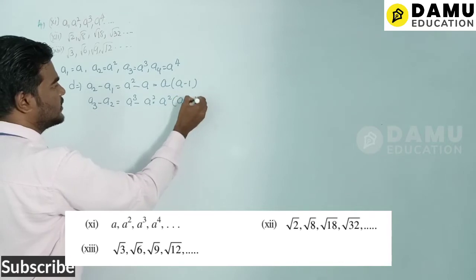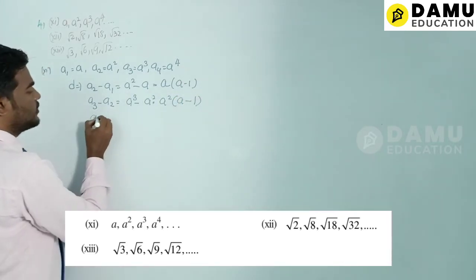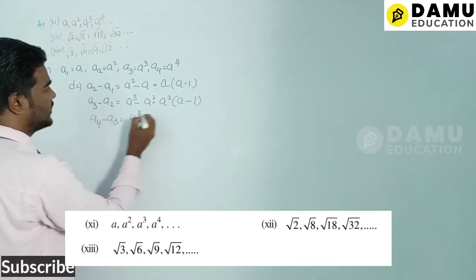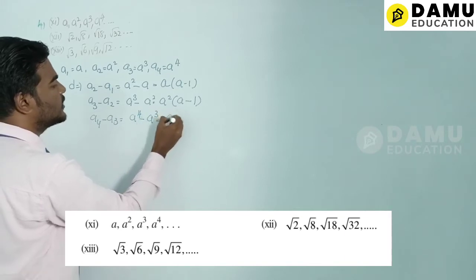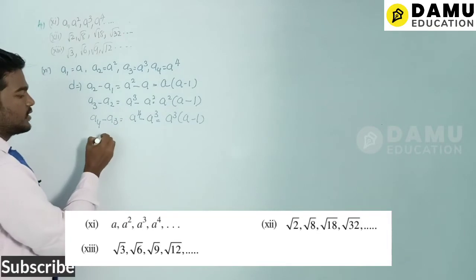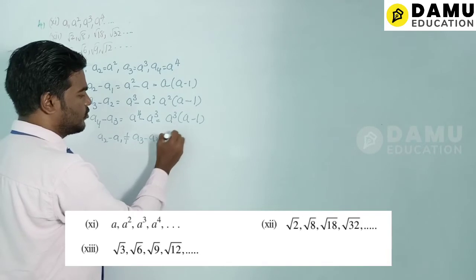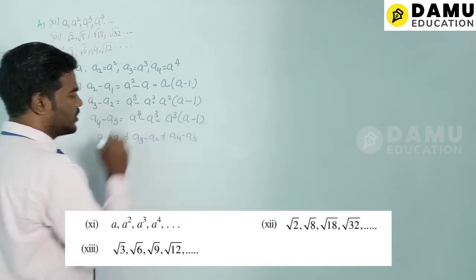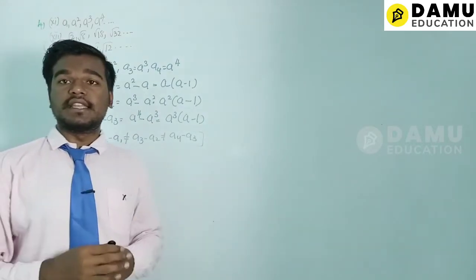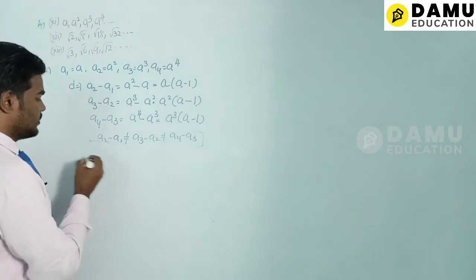And a4 − a3 = a⁴ − a³ = a³(a − 1). Since a(a−1) ≠ a²(a−1) ≠ a³(a−1) in general, the common difference is not the same. The eleventh series is not in AP.